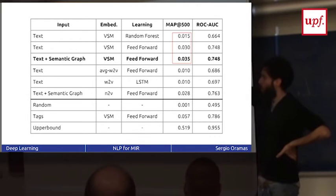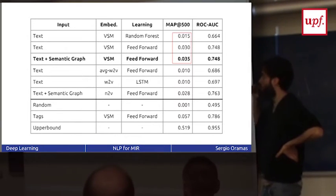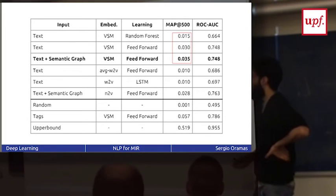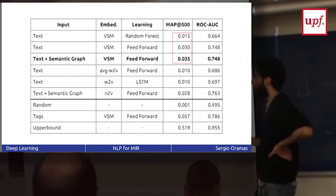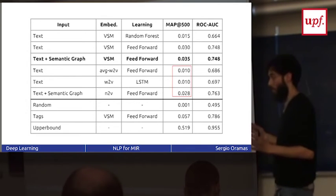We tried a bag of words model, the typical approach of text-based, and input that into a feed-forward network. We also compared that with not using deep learning, just using a classifier like random forest. We improved. Using the typical bag of words approach for embedding, then if we add semantic information using entity linking to the biographies and adding this information to the words, we improve it also.